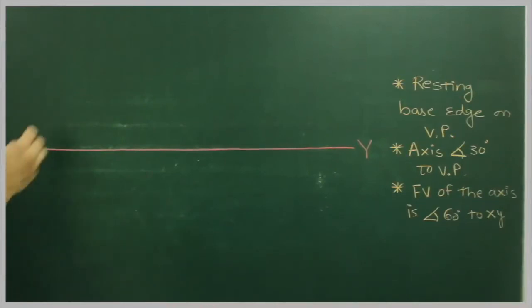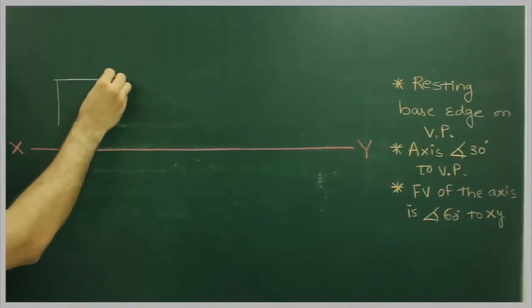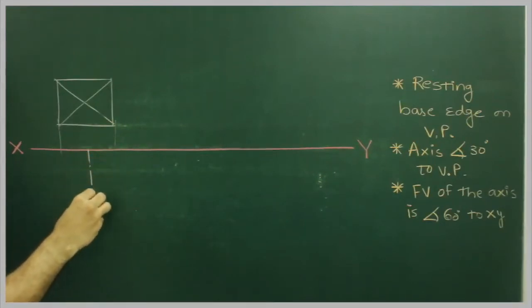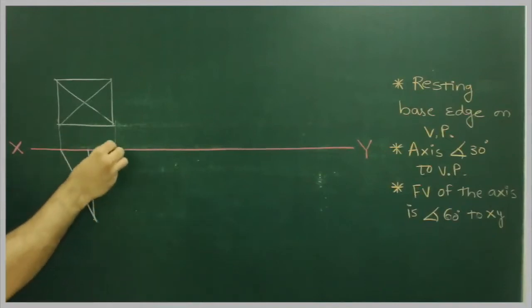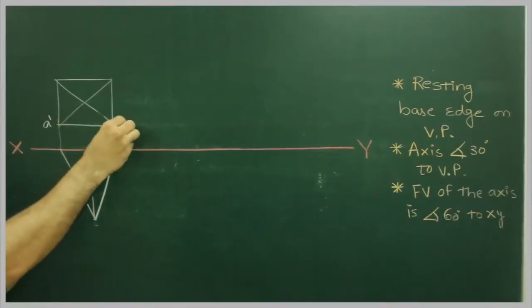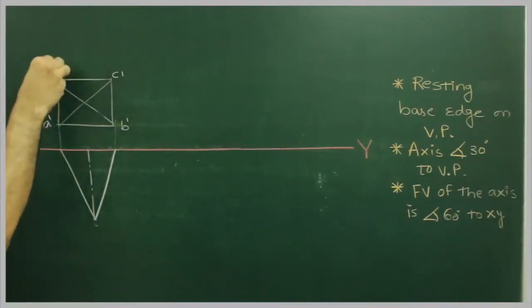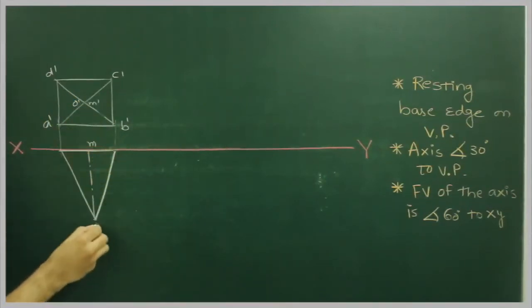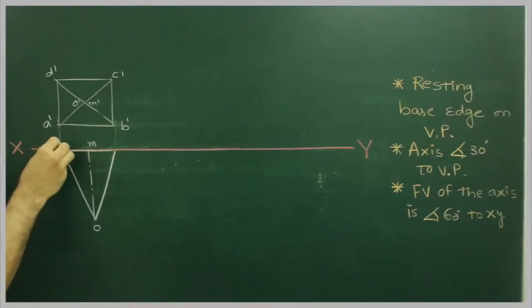So we will start with square in front width. This is a dash, d dash, c dash, d dash, o dash, m dash. This is m. This is o. This is ad. This is dc.